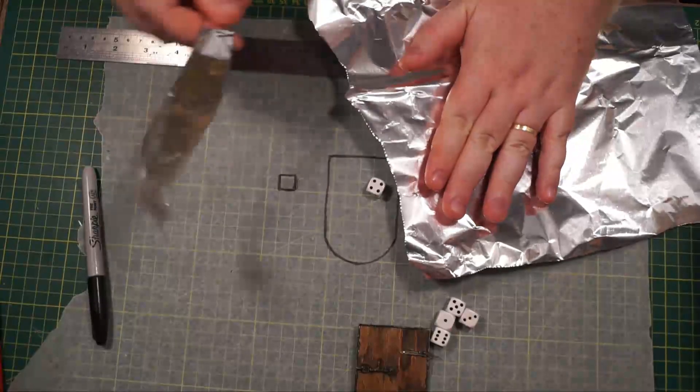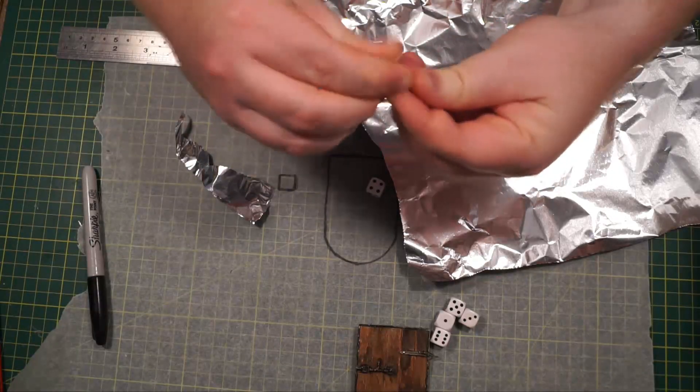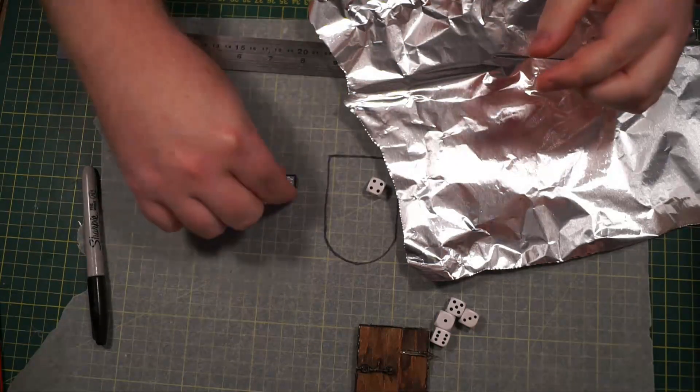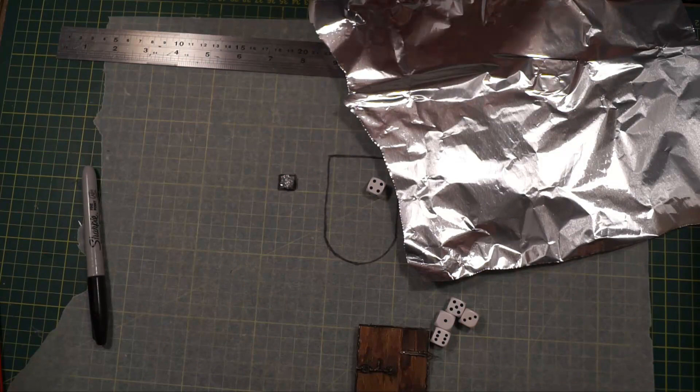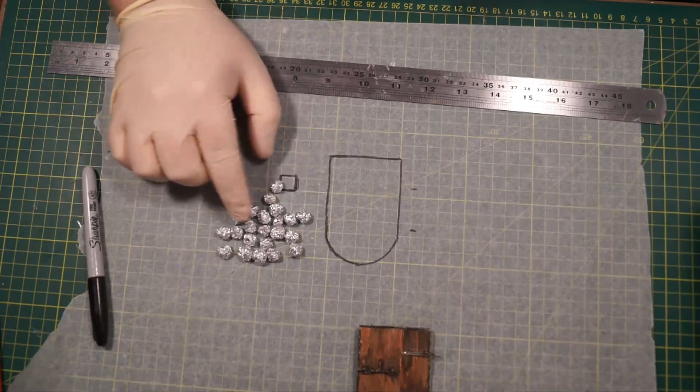So, you've seen this before in the previous arch video, we're basically going to start taking strips, rolling them into balls, but this time we're going to check if these balls fit into that square. Yes, it does. So then we're going to just continue on and make a whole bunch of aluminum balls.